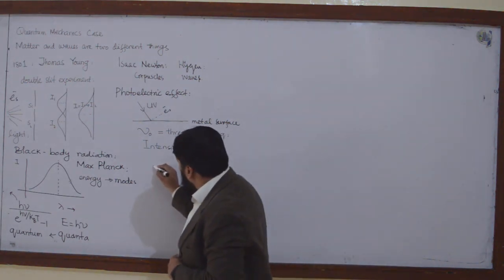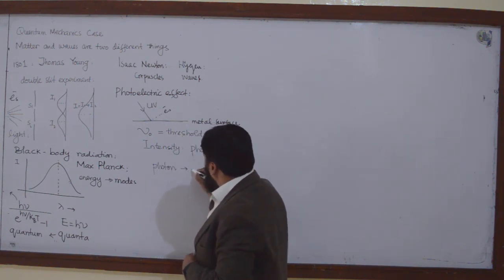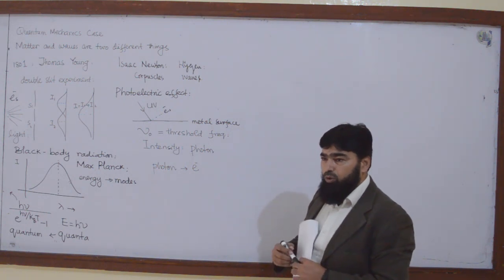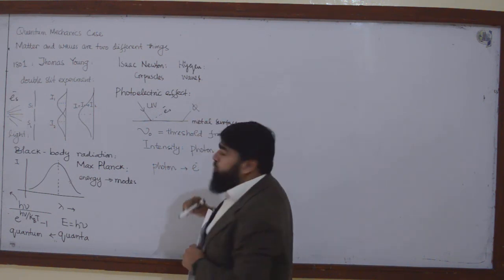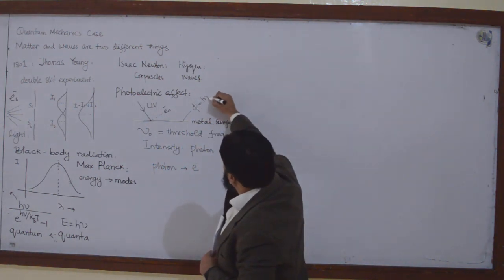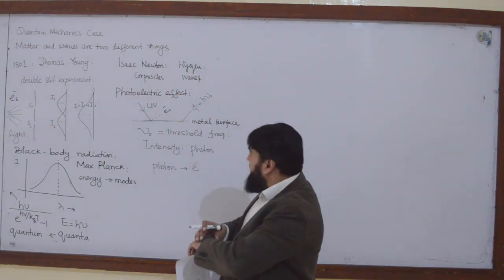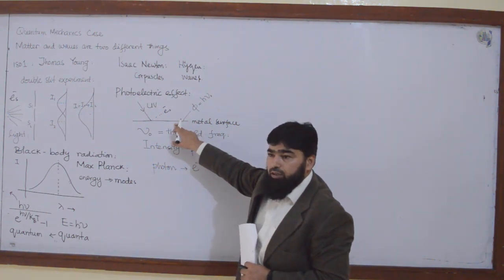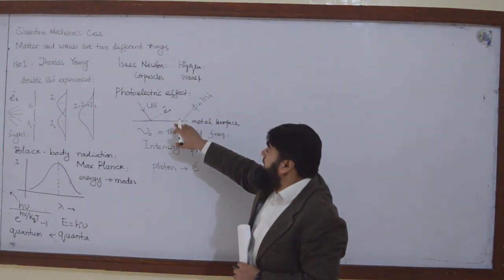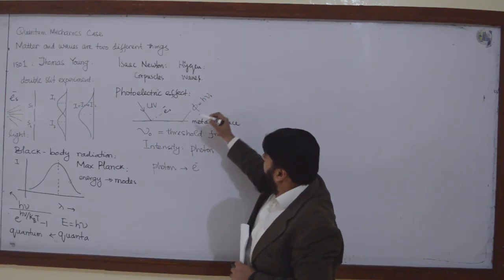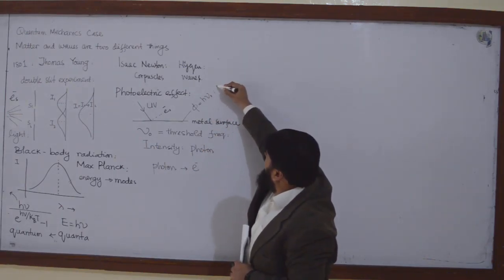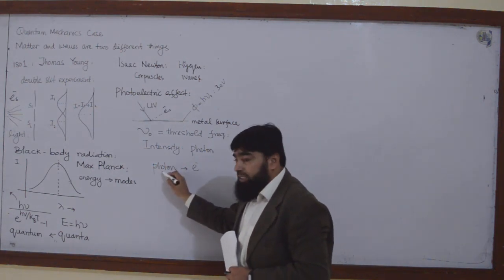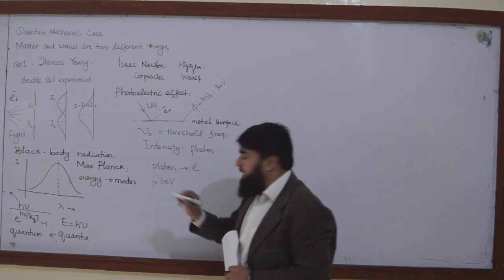He said that one photon will interact with one electron only. The binding energy, which we call the work function, is equal to H·ν₀. This is the binding energy of the electron to the surface. Electrons are plentiful on a metal surface, but inside a metal they have a work function. Let's say this work function is equal to 3 electron volts, for example.